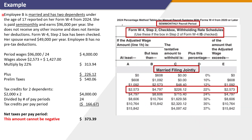Let's look at another example. Employee B is married and has two dependents under the age of 17 reported on her Form W-4 from 2024. She is paid semi-monthly and earns $96,000 per year. She does not receive any other income and does not itemize deductions. Form W-4 Step 2 box has been checked, her spouse earned $49,000 per year, and Employee B has no pre-tax deductions. We start by dividing the annual wage of $96,000 by 24, which is $4,000. Since the employee has no pre-tax deductions, we proceed to find the correct section of the percentage table for a Married Filing Jointly taxpayer who has checked Step 2 of Form W-4.